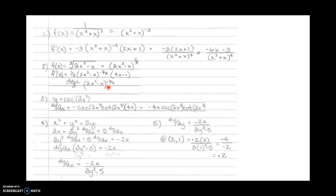For the next one, I want to take the derivative of the cosecant of a quantity. The derivative of cosecant of anything is negative cosecant cotangent of that thing, then we multiply by the derivative of that thing. So the derivative of 2x squared is 4x. The derivative of the outside is negative cosecant cotangent of 2x squared, and then we multiply by the derivative of the inside, which is 4x.